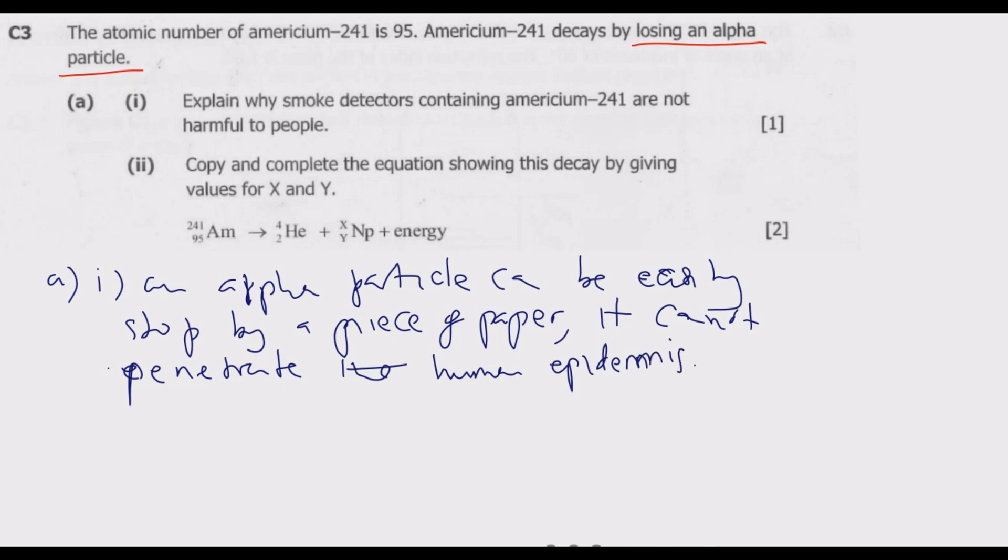Because it's weak, its level of penetration is so weak, it cannot harm human beings. If it can be stopped by a piece of paper, it would not enter the human skin unless it is inhaled or ingested directly. Thus it is not harmful to human beings. It's about penetration. Remember, gamma is the most penetrative radiation among the three.